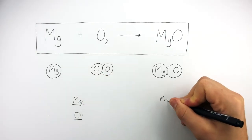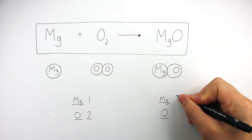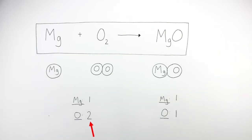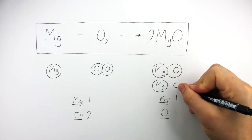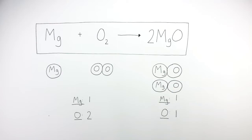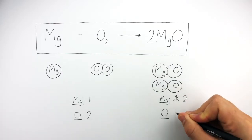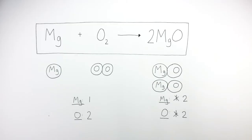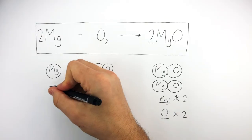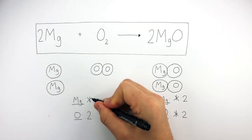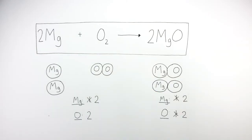Underneath we write out the elements and count how many atoms there are on each side of the equation. We can see there are two oxygen atoms on the left and one oxygen atom on the right. So if we put a big two in front of the MgO, this multiplies the number of magnesium oxide compounds by two, so now there are two magnesium atoms and two oxygen atoms on the right. Now the oxygen atoms are balanced. We then put a big two in front of the Mg on the left, which means there are now two magnesium atoms on the left. The equation is now balanced.